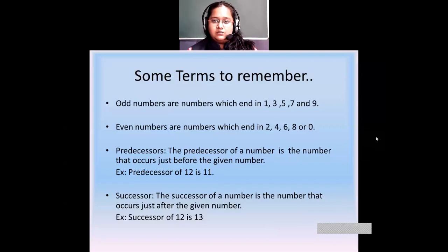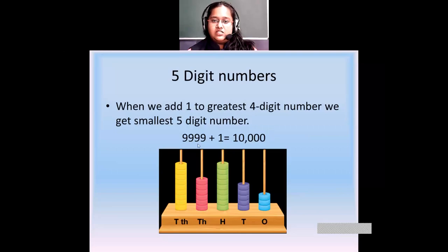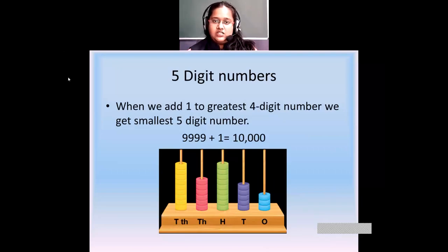These were some terms we saw. Then we saw what are 5-digit numbers. When we add 1 to the greatest 4-digit number, which is 9,999, we get 10,000. So 10,000 is the smallest 5-digit number. In 5-digit numbers we have ones, tens, hundreds, thousands, and ten-thousands.